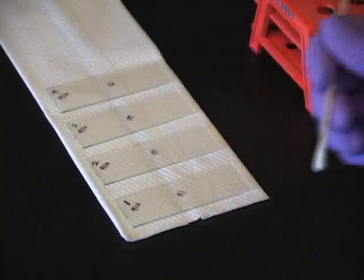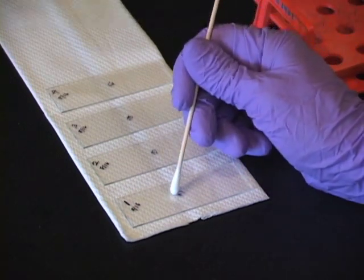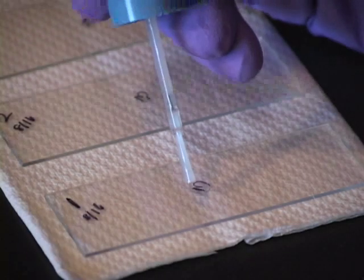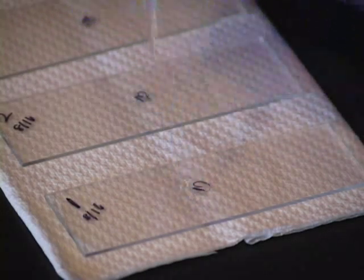Remove excess Citifluor around the edges of the coverslip with a cotton swab applicator. Carefully seal the coverslips around the edge with nail varnish.